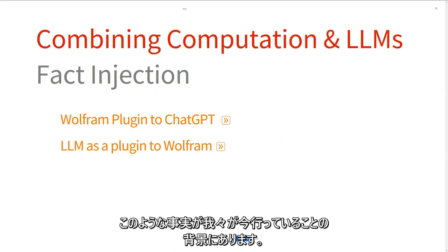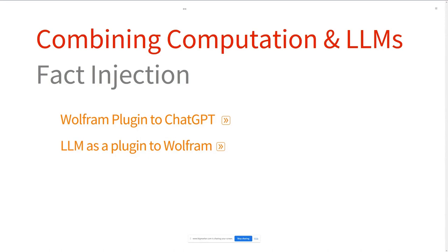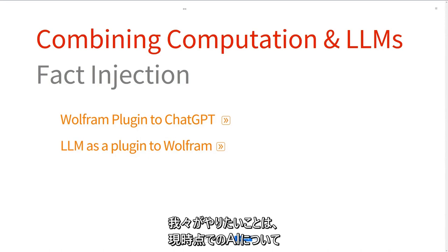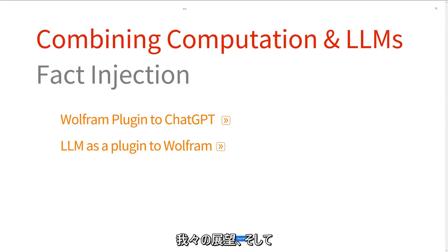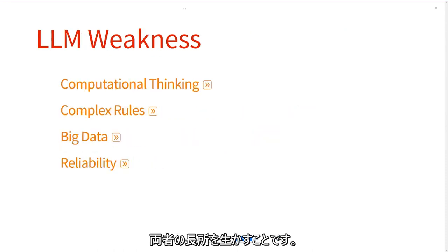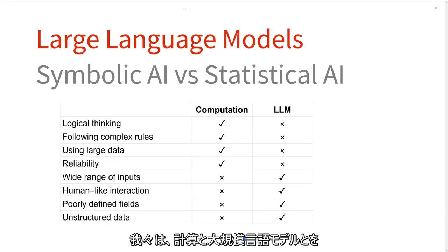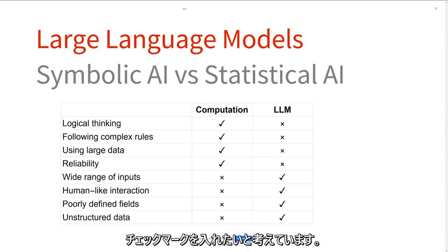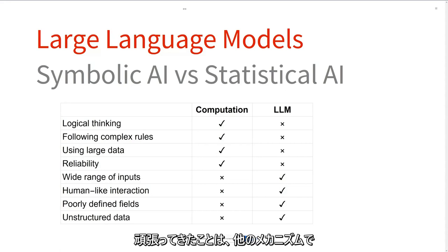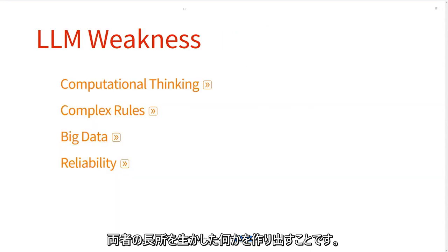So that's the background. What we want to do — our outlook on AI and where we're putting all of our efforts — is to try and take the best of both worlds. Going back to that table, we want a combination of computation and large language model that ticks all of the boxes. We've been thinking about and working on the mechanisms to bring those two worlds together to make something that is the best of both.